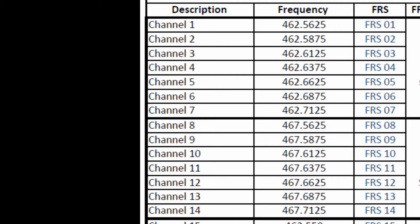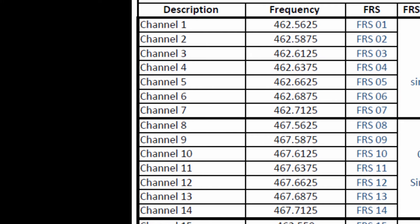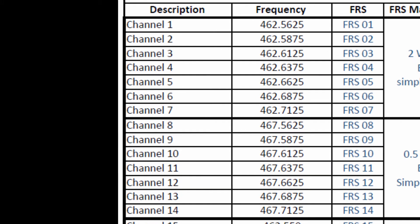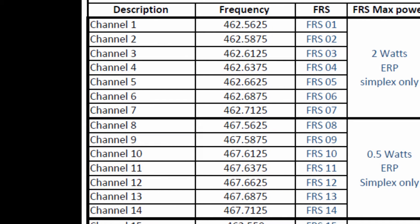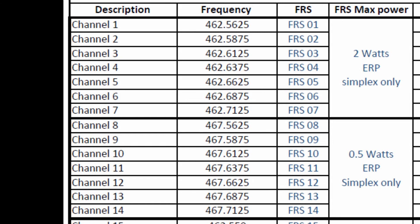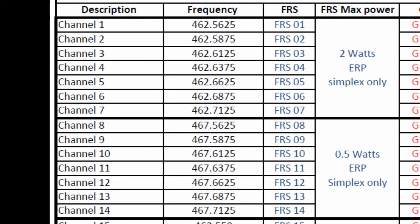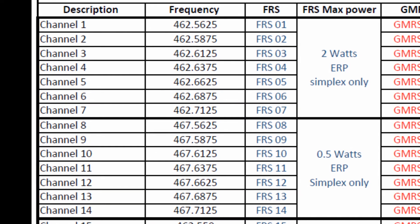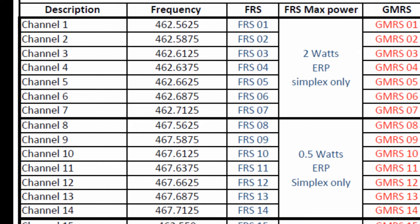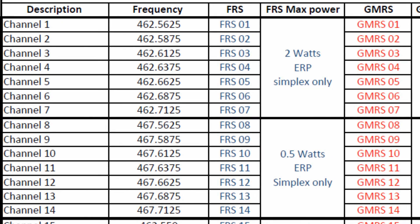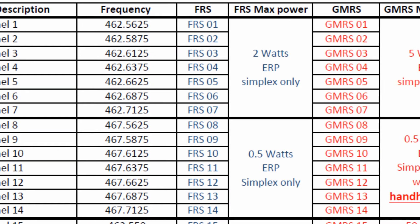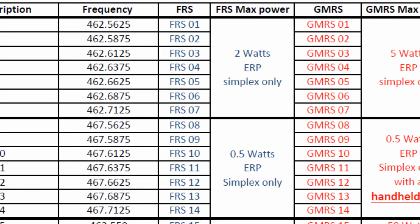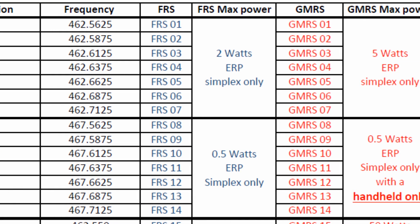Channels FRS 1 through 14 are now defined by the rules. Channels 1 through 7 have a 2-watt ERP, simplex only. Simplex means radio to radio — you're not using a repeater to retransmit your signal. ERP is the effective radiated power out of the antenna. Channels 8 through 14 only have a half-watt ERP, so they are low power only, while channels 1 through 7 can range from 0 up to 2 watts out of the antenna.